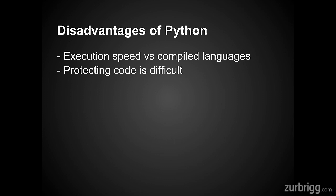Python does have a couple of disadvantages, though this will depend on the requirements of your application. When compared to a compiled language, Python's execution speed is generally slower. For applications involving large data sets or complex math, it can generally be beneficial to use a compiled language. The second downside is protecting your code — because Python is interpreted, it is very difficult to hide code from prying eyes. So if your application is proprietary and shared with people outside your organization, it's safe to say that if somebody wants to see the code and how it works, they will be able to. This is much more difficult with compiled languages. In general, though, the advantages of working with Python far outweigh the disadvantages.